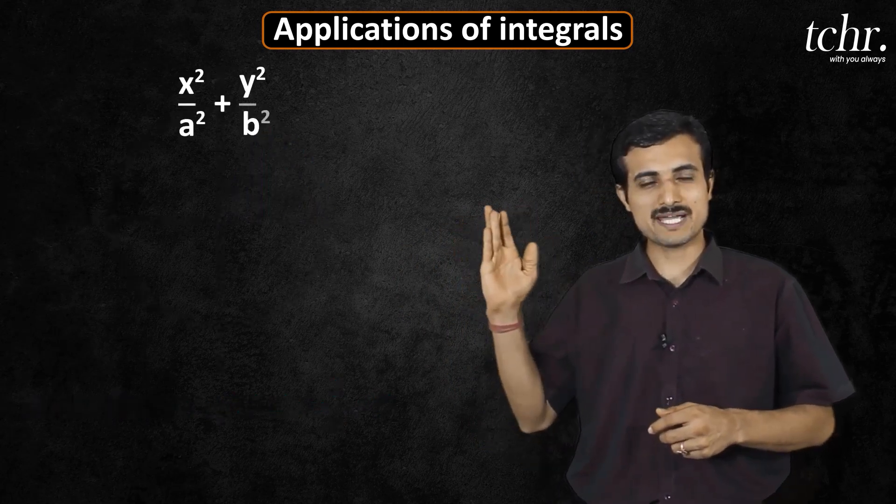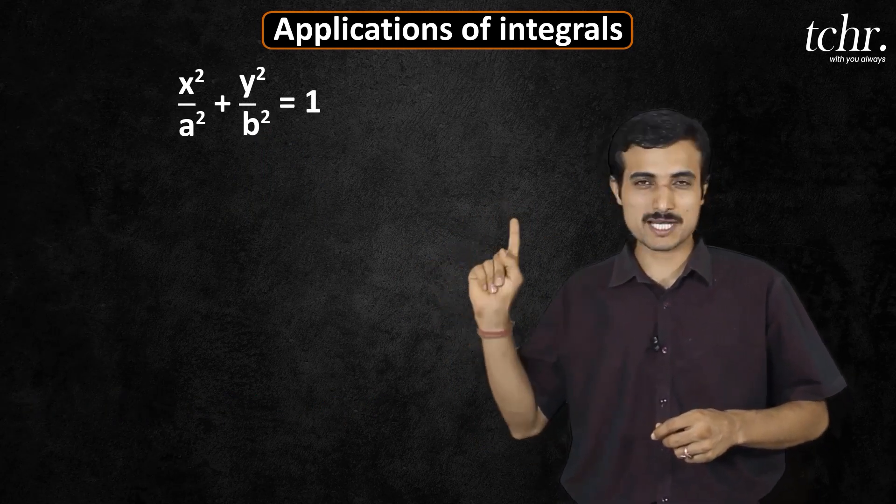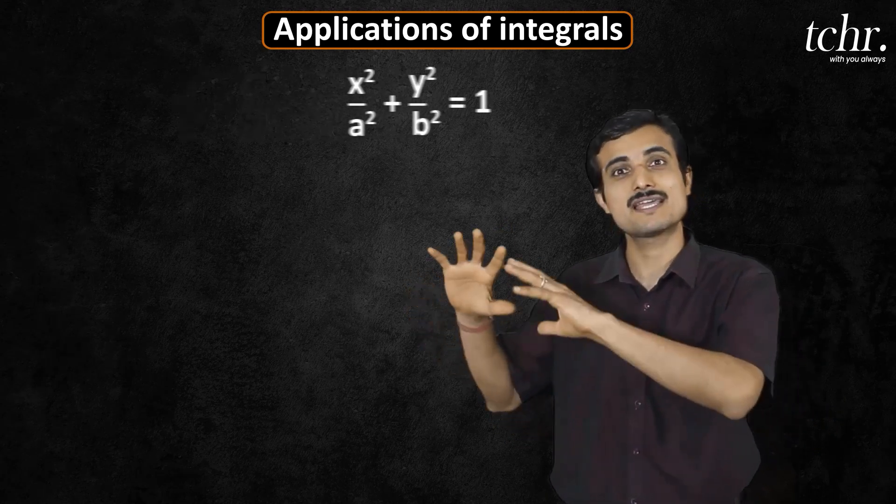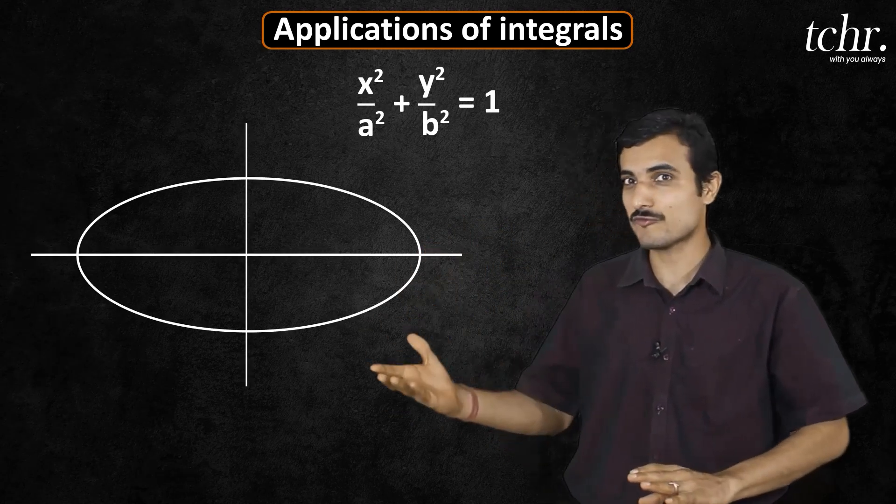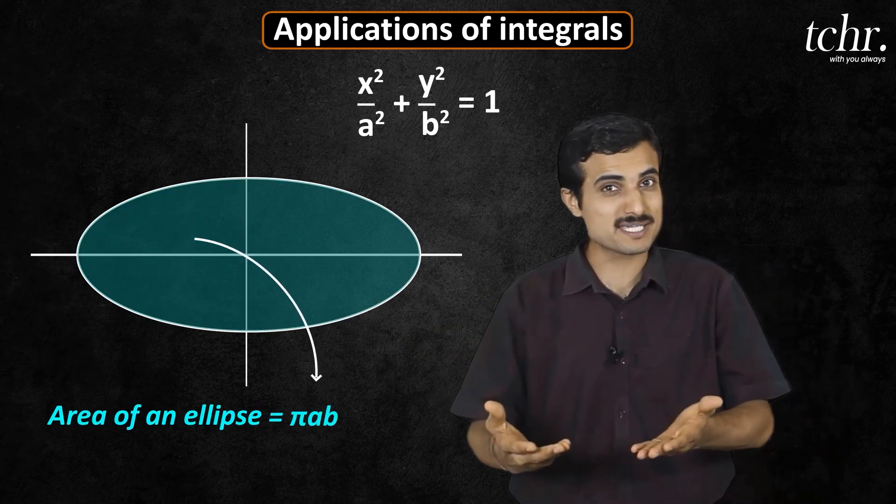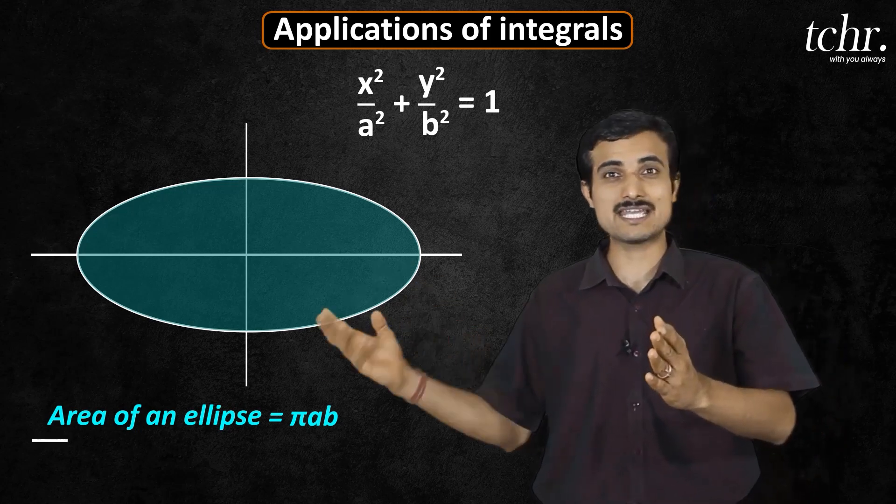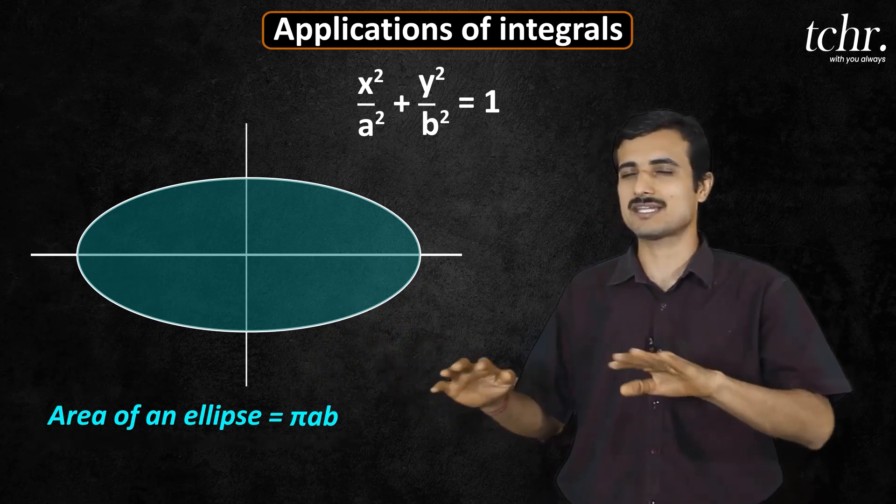x square by a square plus y square by b square equal to 1, this equation represents ellipse. So how do you find the area of an ellipse? Pi into a b. Just note on the values of a and b, final answer the area must be pi into a b, that's it.